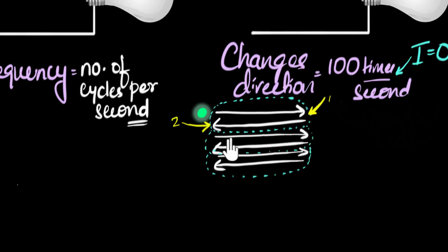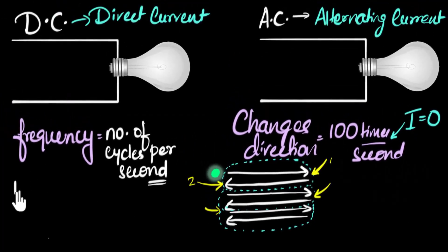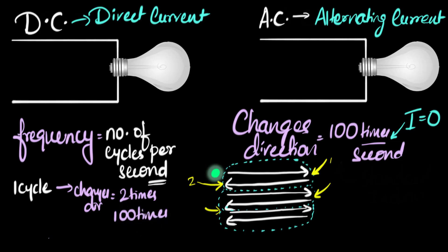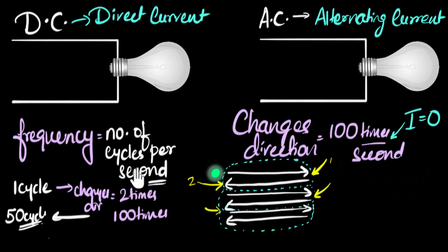The same applies to the second cycle as well — goes forward, changes its direction, goes back, changes its direction. So in one cycle, the electron changes direction two times. If the electron changes direction 100 times, how many cycles is that? The number of cycles is half the number of direction changes. So if the electron changes direction 100 times, that means it goes through 100 divided by 2 — 50 cycles. So in this case, the frequency is 50 cycles per second.